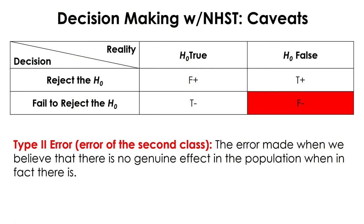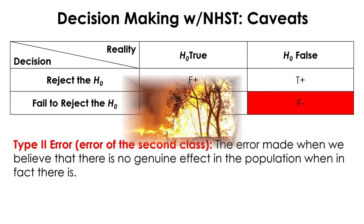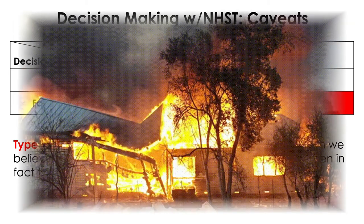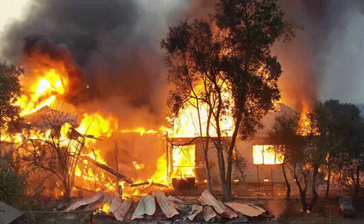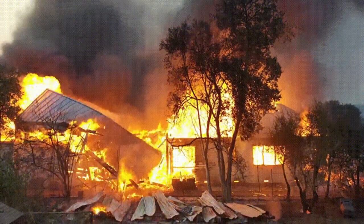On the other hand, if you fail to reject the null after running an NHST, but the null is in fact false, then you just made an error called Type 2 error. This is when you claim there is nothing when in fact there is something — the alarm doesn't go off when there is fire.